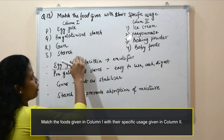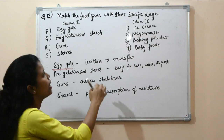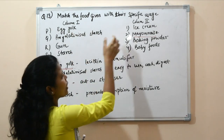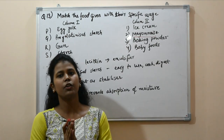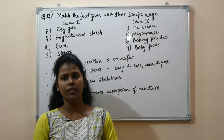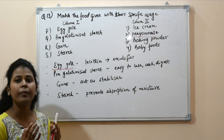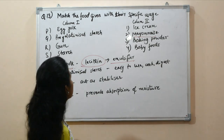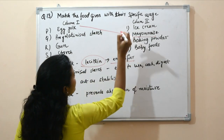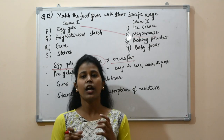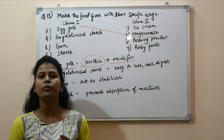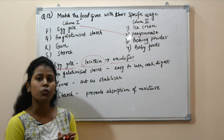Question number 13: match the food in column 1 with its specific usage in column 2. First is egg yolk. Egg yolk is utilized in mayonnaise — a dressing which is an emulsion prepared using oil and vinegar. Egg yolk is added because it contains lecithin, which acts as an emulsifier to stabilize the oil-and-water emulsion.